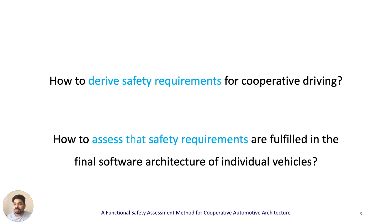Our paper tackles two challenges relating to the safety of cooperative driving. One, how to derive and allocate safety requirements for the functional architecture of cooperative driving systems. Two, once we have the requirements, how to assess whether the requirements are fulfilled in the software architecture of participating vehicles.